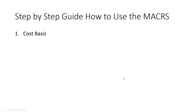Step number one is you have to know how much you spent for a piece of equipment that is going to depreciate over the years. Let's say you're going to buy a vehicle or car and use it for taxi or renting purposes, and you spend $30,000 total for that.